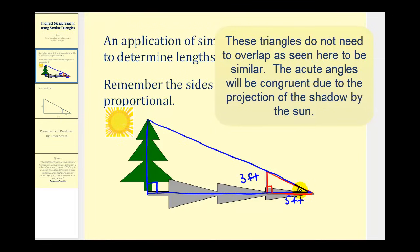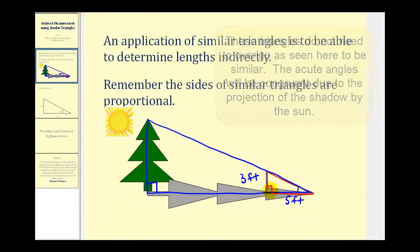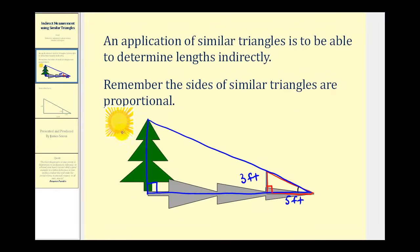They share this angle here and they also both contain a ninety degree angle which would also be congruent. Which means in order to determine the height of this tree we would just need to measure the shadow of the tree along the earth, which is obviously a lot easier to do than climbing the tree.